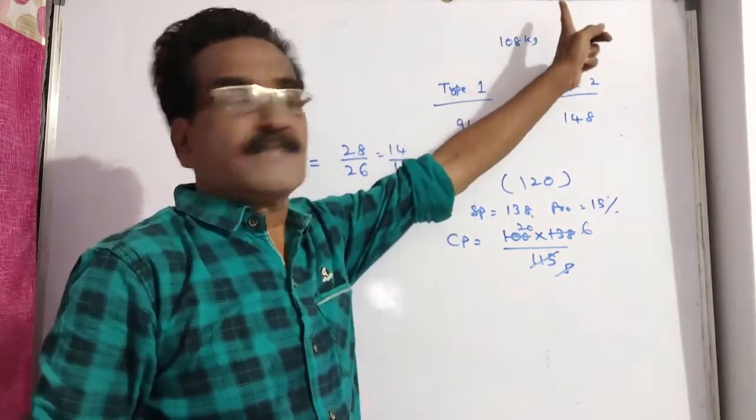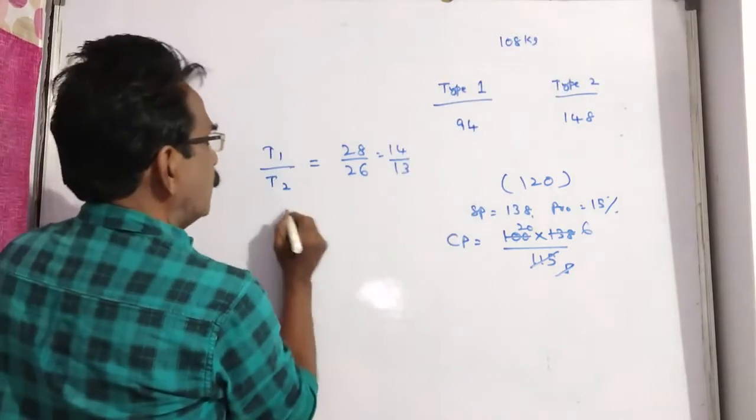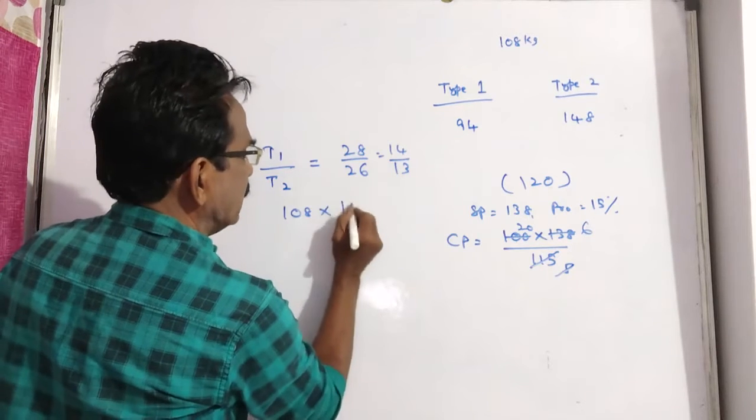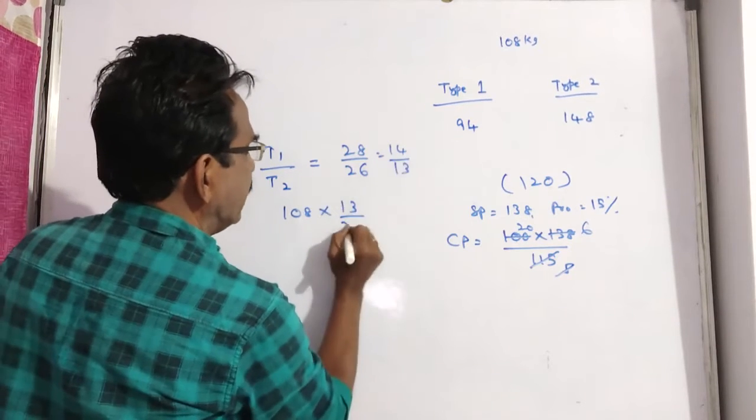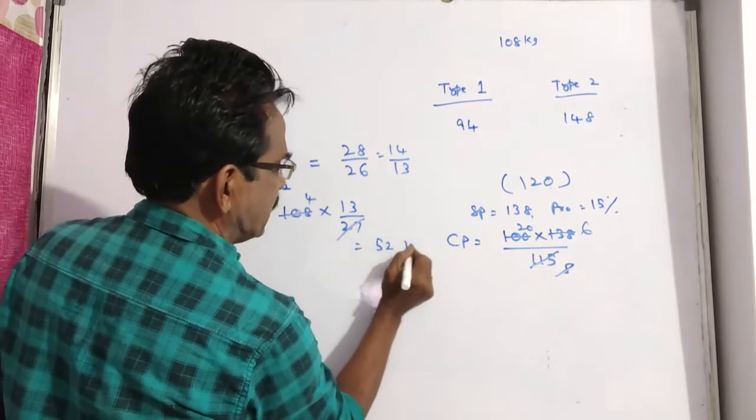We want type 2. Total amount is 108 kgs, we want type 2. So 108 into, we want type 2, 13 by 27. 4 times 13 is 52 kgs, that is the required answer.